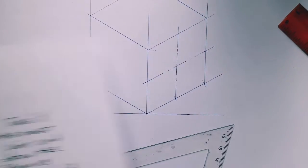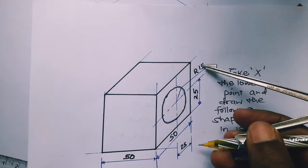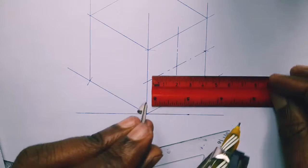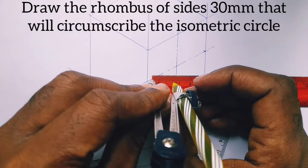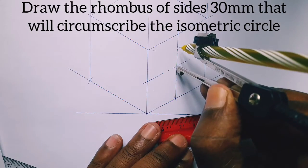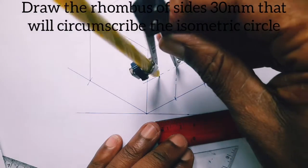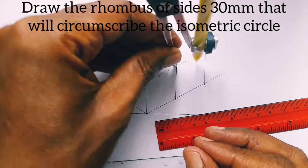And our circle is of radius 15 millimeters, so we have to draw a rhombus first because we are going to use the four-arc method in isometric in drawing the isometric circle. So we measure, that is the radius, 15 millimeters, because we need 30 millimeters, a rhombus of side 30 millimeters. So we mark off 15 from the center point.